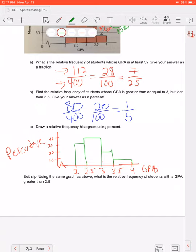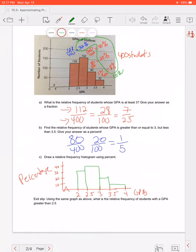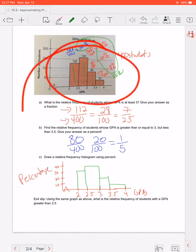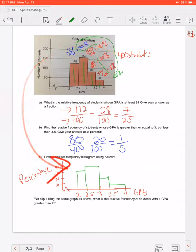So that is a relative frequency histogram using percentages. I calculated the percentage of each one of my bars up here and then put that into another histogram. And notice the bars are almost the exact same height here to here. That should happen. It should look very similar.